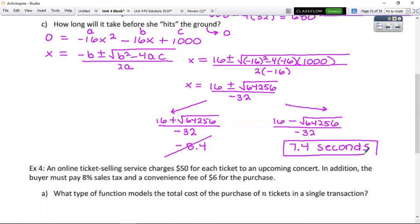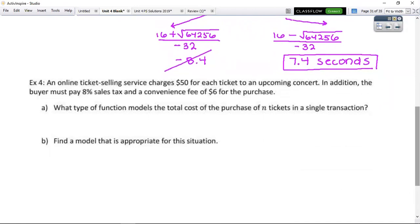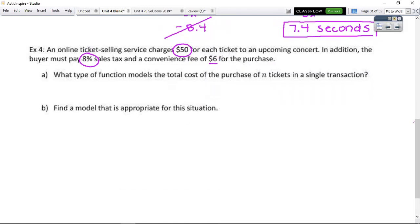How do you guys feel with the quadratic modeling? Okay. Perfect. All right. Next one. An online ticket selling service charges $50 for each ticket to an upcoming concert. In addition, the buyer has to pay sales tax at 8% and a convenience fee of $6 just because. What type of function is going to model this transaction? Linear. Anytime you buy stuff, you're going to be linear. Linear. It's a purchase. You can say that.